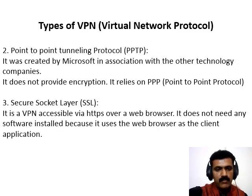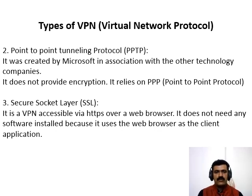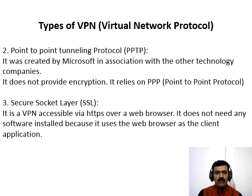The second one is Point-to-Point Tunneling Protocol (PPTP). Generally, it is the most widely used VPN protocol among Windows users. It was created by Microsoft in association with other technology companies. The most significant disadvantage of PPTP is that it does not provide encryption. It relies on Point-to-Point Protocol, which is implemented for security measures. It is also available for Linux and Mac users. As compared to other methods, PPTP is a faster method.